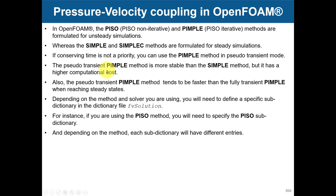The pseudo-transient PIMPLE method is more stable than the SIMPLE method but has a higher computational cost. Since we always want more stability and accuracy, it's a good idea to use PIMPLE in pseudo-transient mode. PIMPLE tends to be faster than fully transient, sitting somewhere between steady SIMPLE and transient PIMPLE. Depending on the solver you are using, you will need to define a specific sub-dictionary in the fvSolution file.